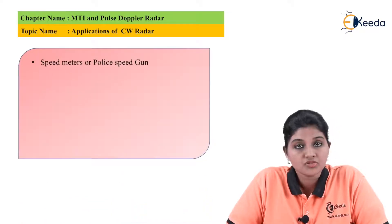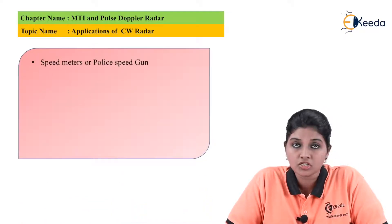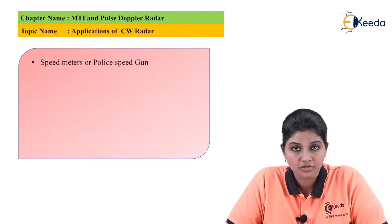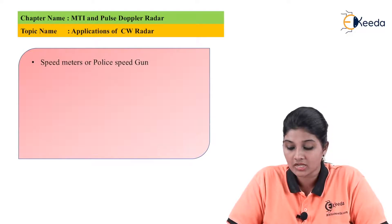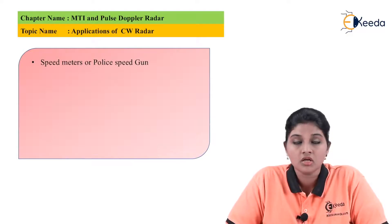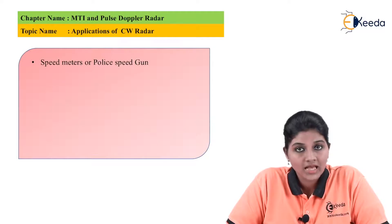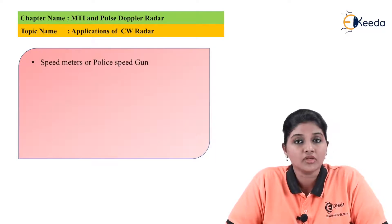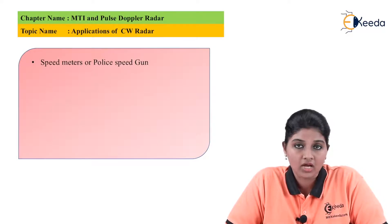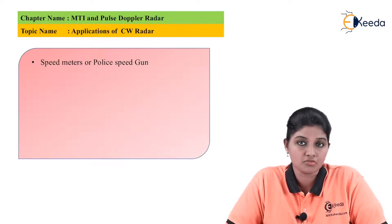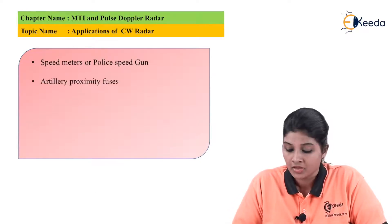Continuous wave radars are basically used in applications like speed meters, or they can be used in applications like police speed guns. The application of radar is nothing but finding out the vehicle speed on highways, so we can use the continuous wave radar for the measurement of speed.